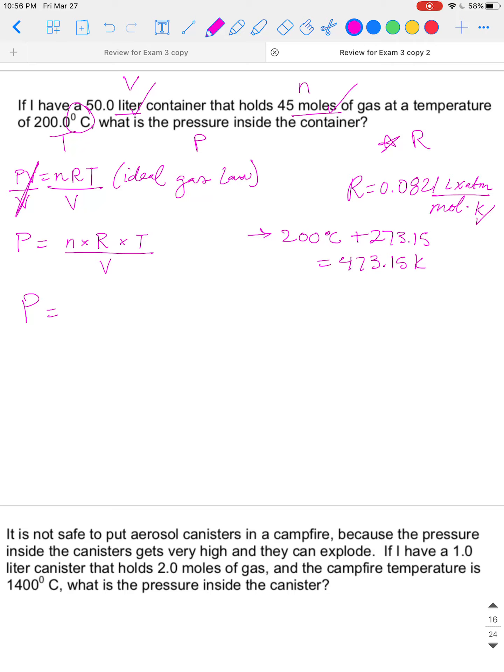So now we just plug everything in. P equals number of moles is 45 moles times R, which is 0.0821, and it is units of liters times ATM over moles times Kelvin. That's N times R. Now we'll do times T, which is 473.15 Kelvin. And that's all divided by volume. And our problem says we have 50.0 liters.